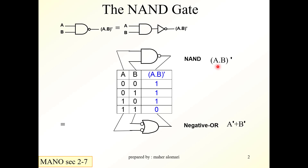Applying De Morgan's theorem, A·B bar is equal to A bar OR'd with B bar. So another symbol for the NAND gate is the negative OR — an OR gate between the two negative variables A bar and B bar.